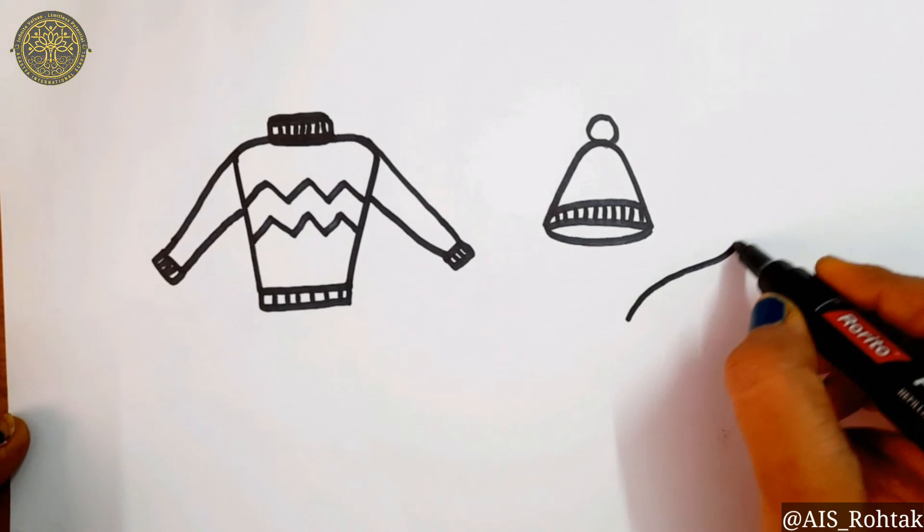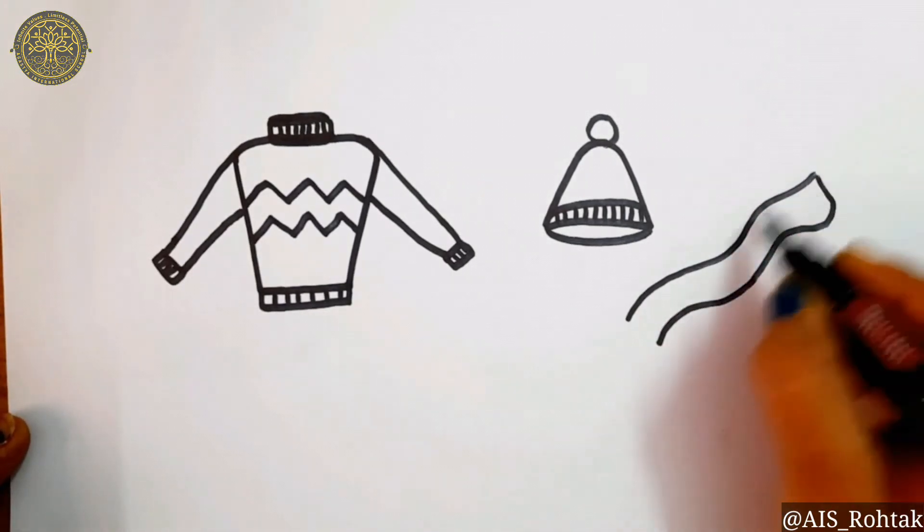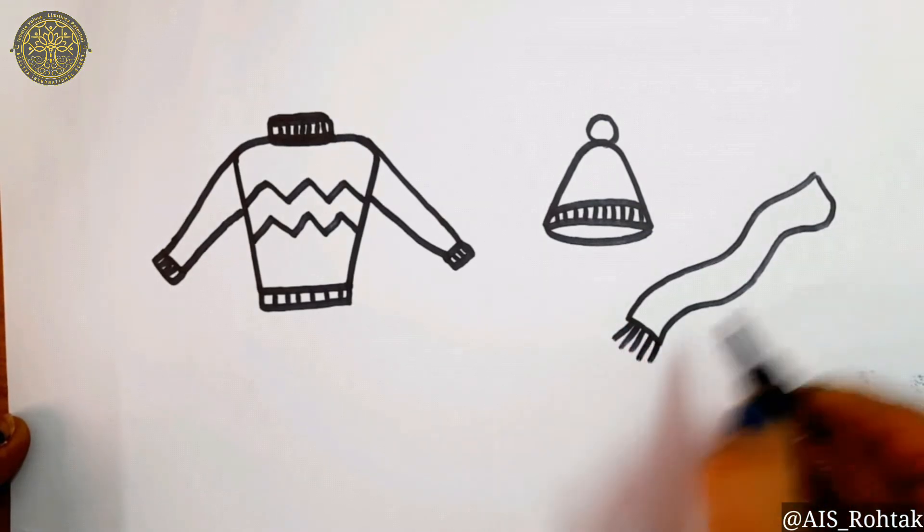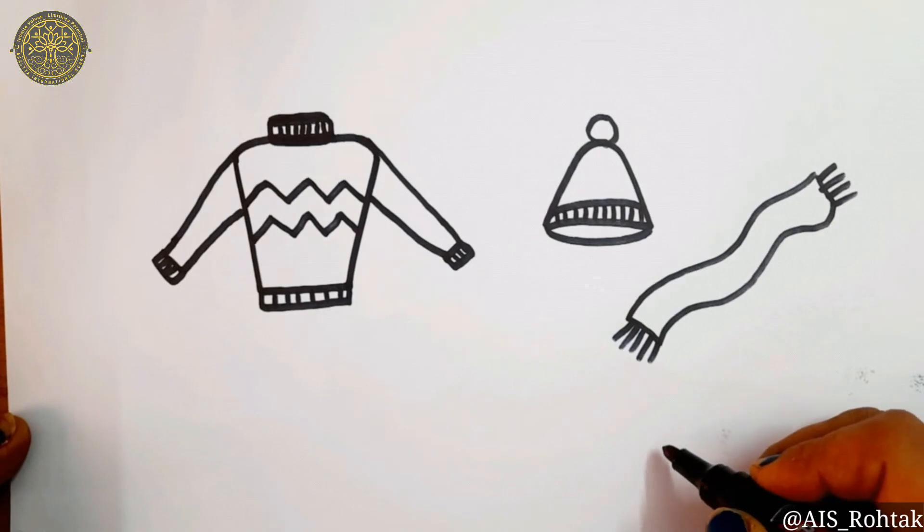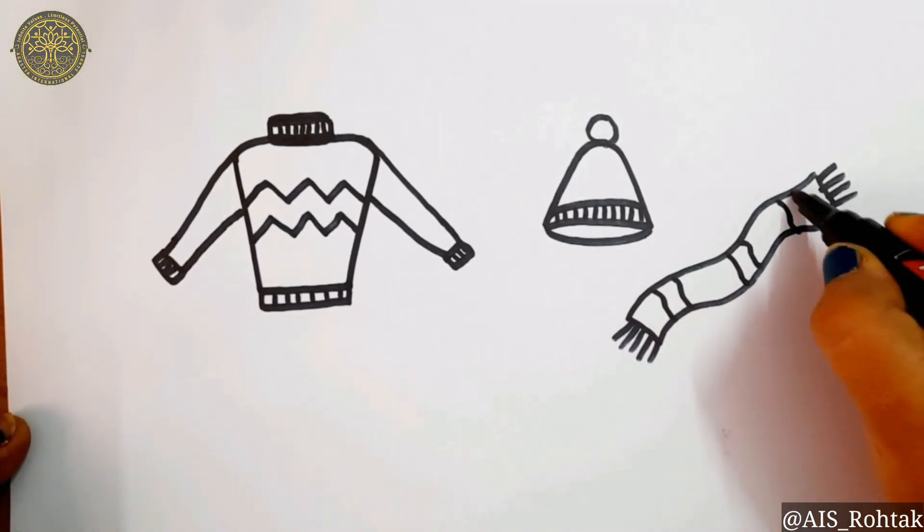For the muffler, draw a free hand line and one more line. Now join the both ends and draw some standing lines on each end like this. Draw some design in the muffler by making wavy lines.